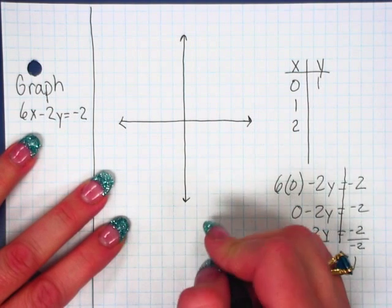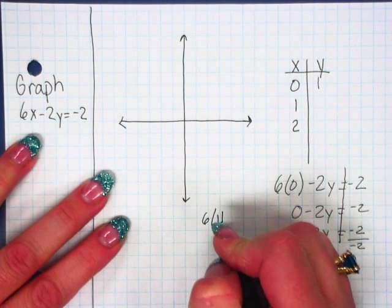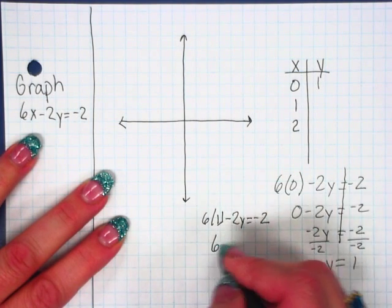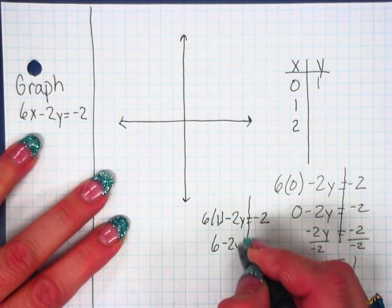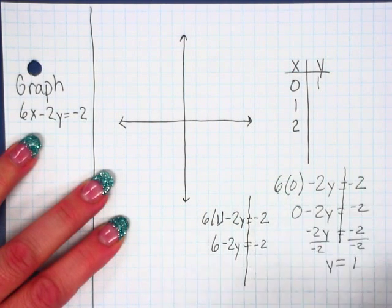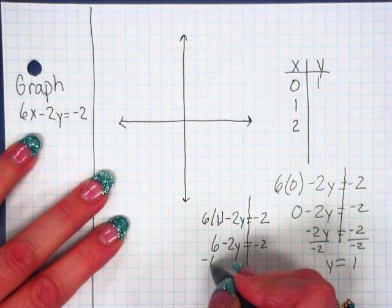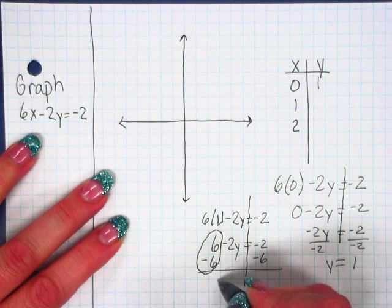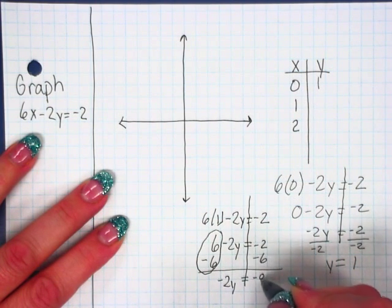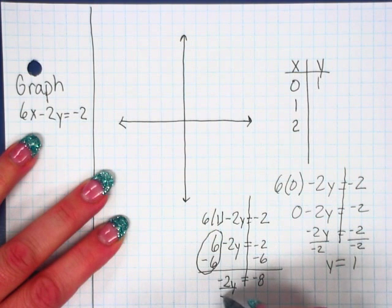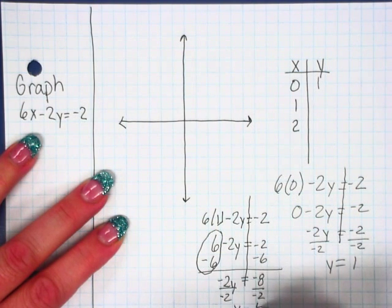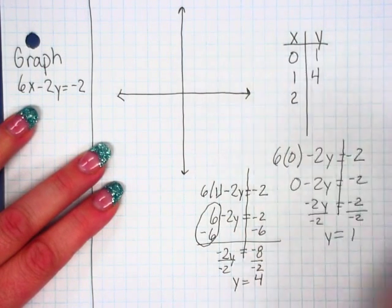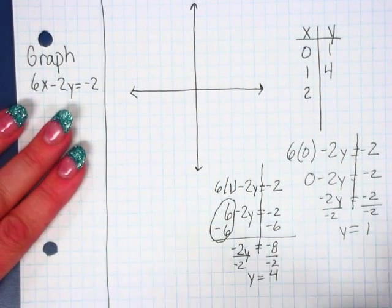What happens if x is 1? So 6 times 1 minus 2y equals negative 2. So I get 6, draw my mirror, minus 2y. Opposite operations. This is a positive 6. We're going to subtract it from both sides. This gives me a 0. I'm left with negative 2y equals negative 8. Opposite operations. y equals 4. So if x is 1, y is 4.